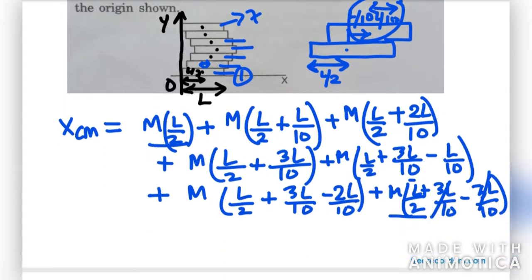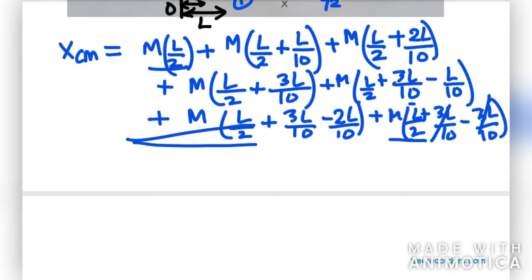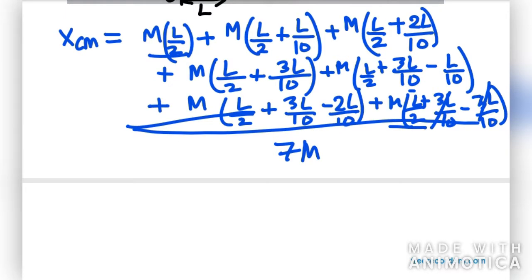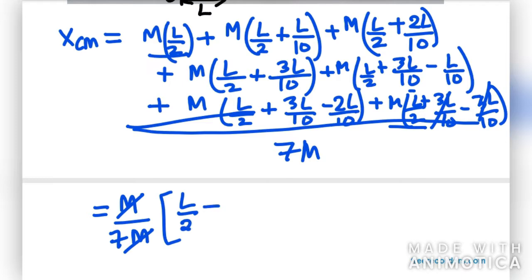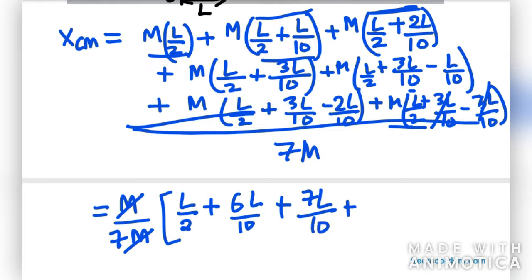Let us solve this now and write the denominator as well. It will be 7M, because we have 7 bricks. So it will be divided by 7M. Taking M common from the numerator, M and M get cancelled. We are left with L/2 for the first term. The second term gives 6L/10 after taking LCM. The third gives 7L/10. The fourth gives 8L/10.